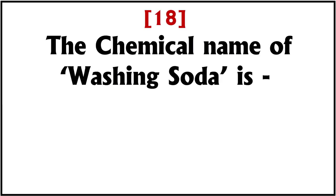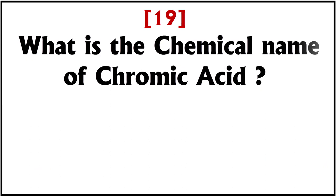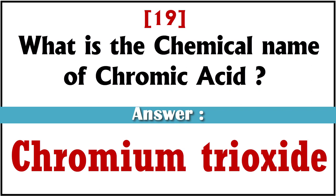The chemical name of washing soda is? Answer: sodium carbonate. What is the chemical name of chromic acid? Answer: chromium trioxide.